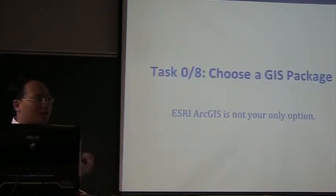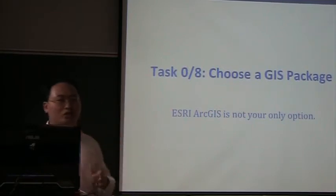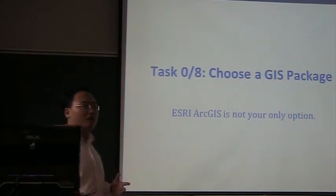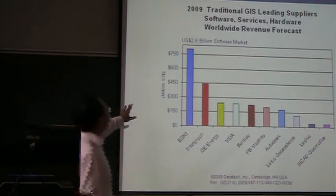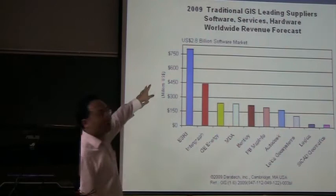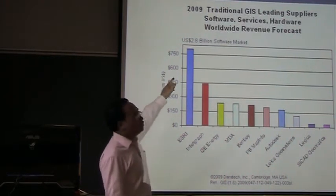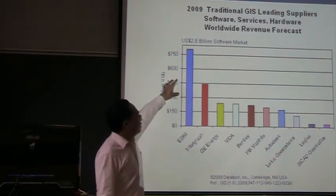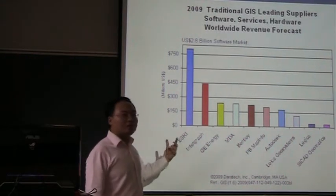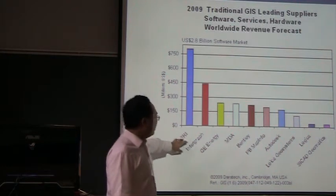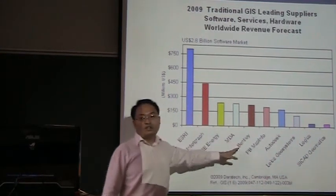Before we talk about any task, let's talk about task zero, which is to choose the GIS package you are going to use. Some of you, when you hear GIS, you probably refer to ArcGIS, which is developed by a company called Esri. But I want to tell you, this is not your only option. This is a figure from a survey conducted by this company in 2009 about the U.S. GIS software market. The total number of money is 2.8 billion. We can see Esri is having the biggest share, but it has some strong competitors. In terms of commercial GIS software, you don't have only one option. One notable company here is Autodesk, famous for AutoCAD and 3DS Max.